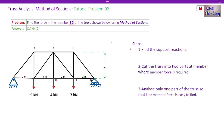The first step is to find the support reactions. To do that, we draw the free body diagram of the whole truss and apply the equations of equilibrium. This is a pin support, and we have two reactions at a pin support.